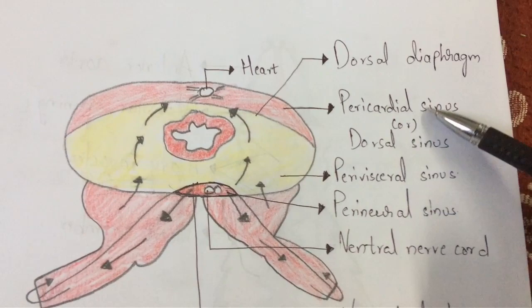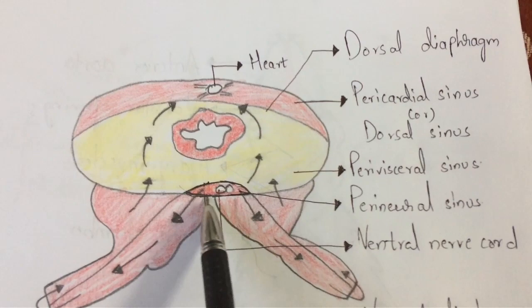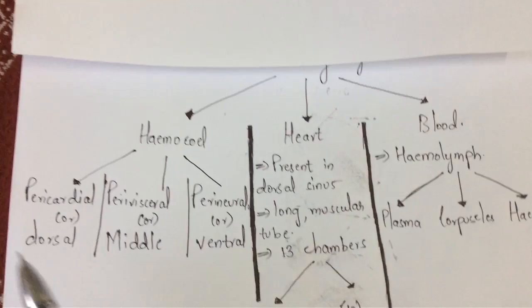Looking at the diagram: the upper red-colored region is known as the pericardial sinus. The yellow-colored region is known as the perivisceral sinus. The black outer border is known as the perineural sinus, which is also called the middle sinus or ventral sinus.